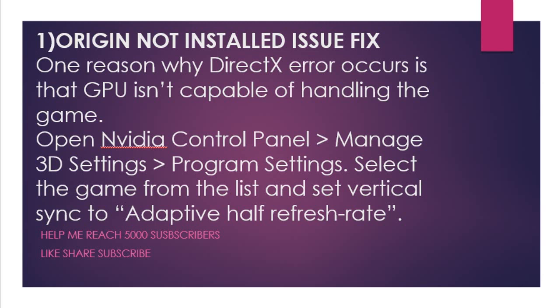After you have done that, restart your system. If you are still facing this issue, it could be a DirectX issue, because DirectX is not allowing the game to launch and instead the game is going into that Origin not install error. To fix that, open the NVIDIA Control Panel, go to Manage 3D Settings, Program Settings, select the game from the list, and set Vertical Sync to Adaptive Half Refresh Rate. That will help your game run quickly before triggering the Origin not install block, so you may get the error but the game will still run and you will be able to play.